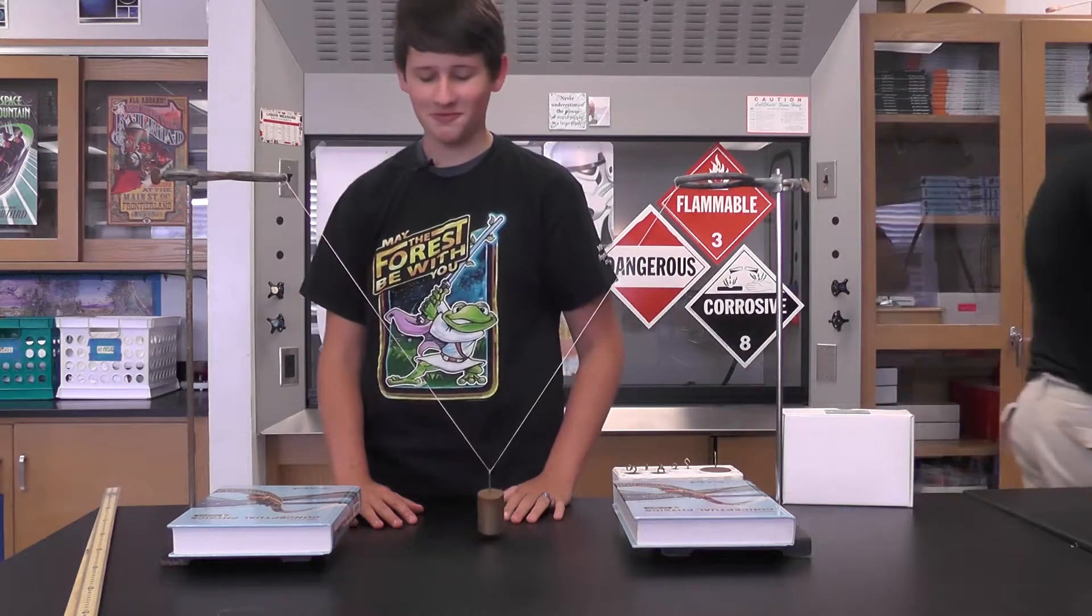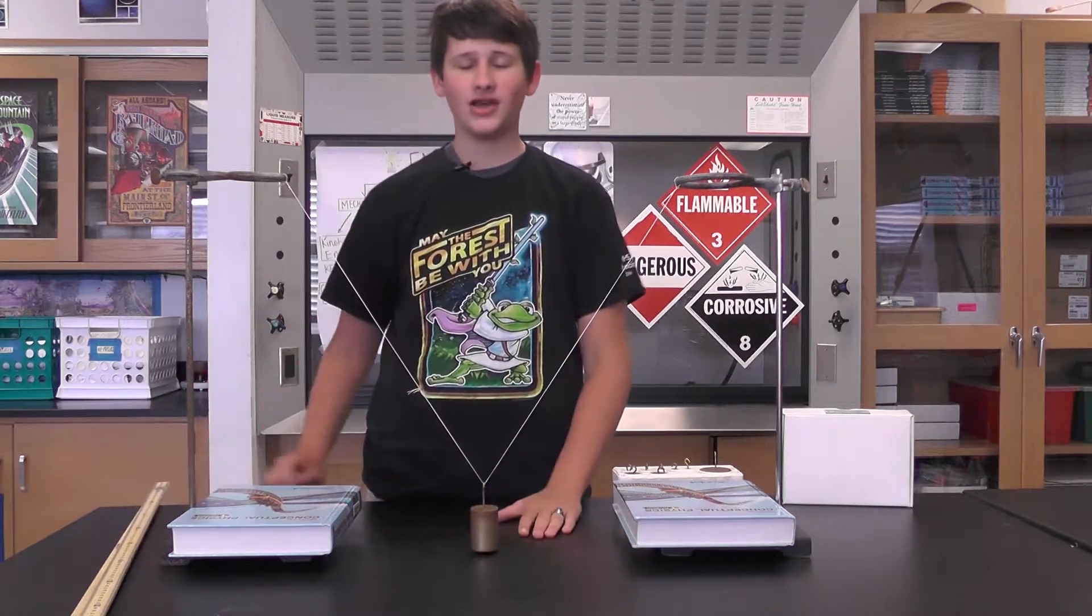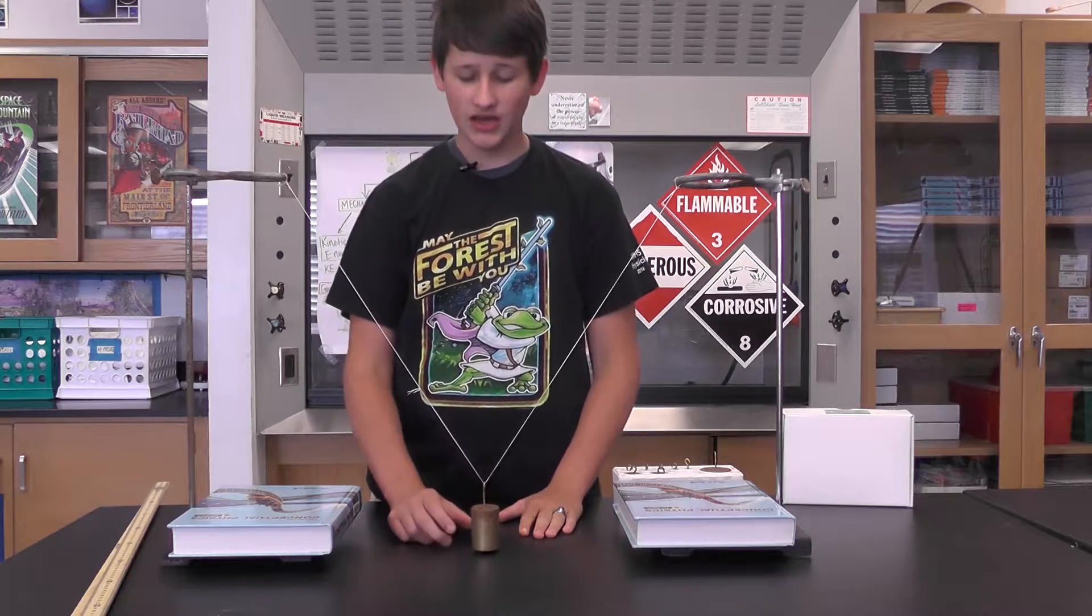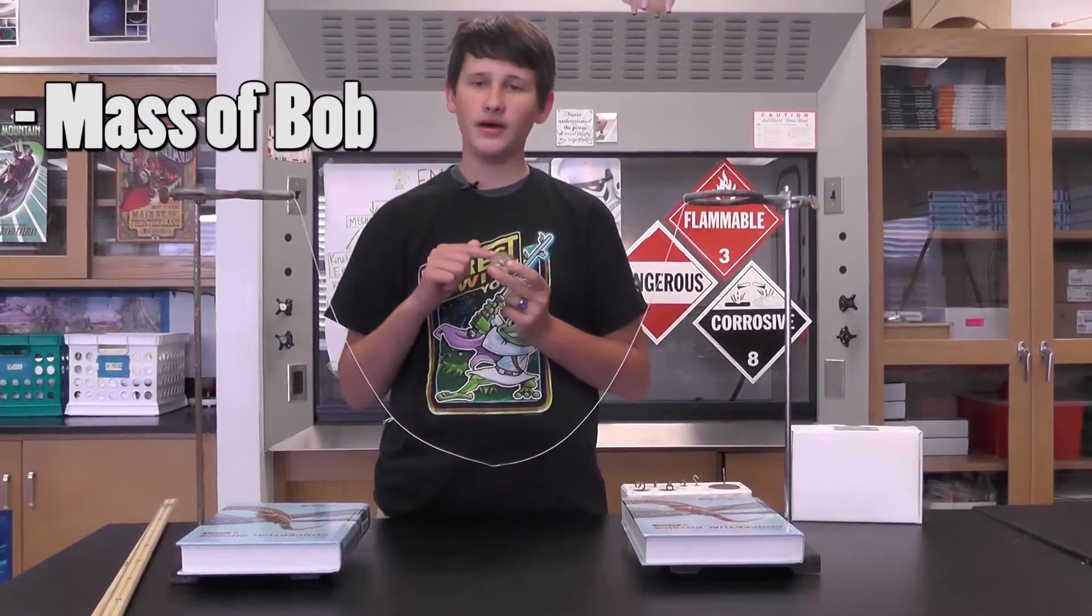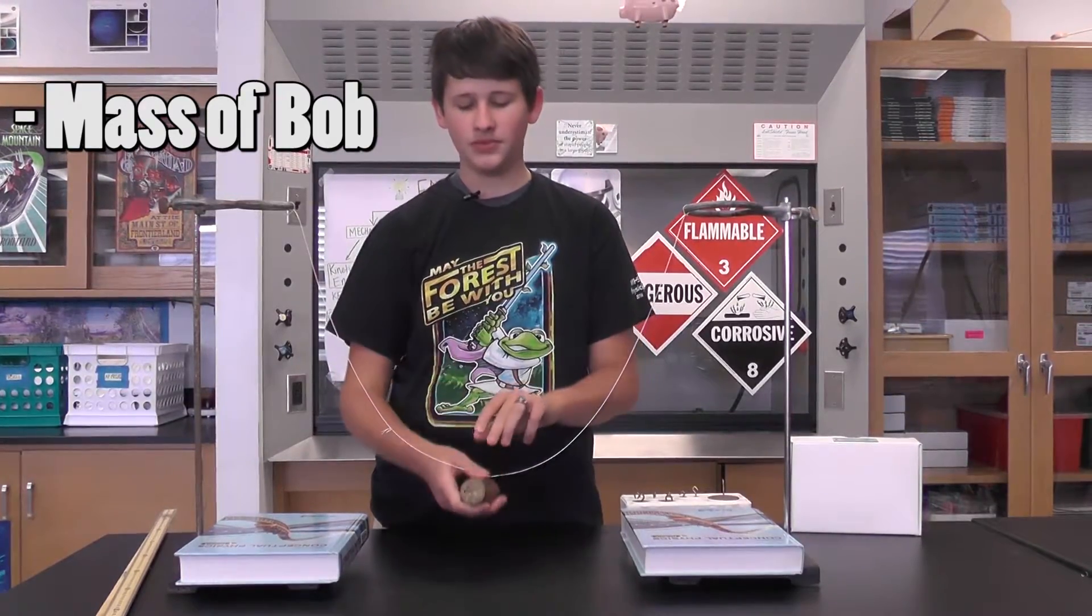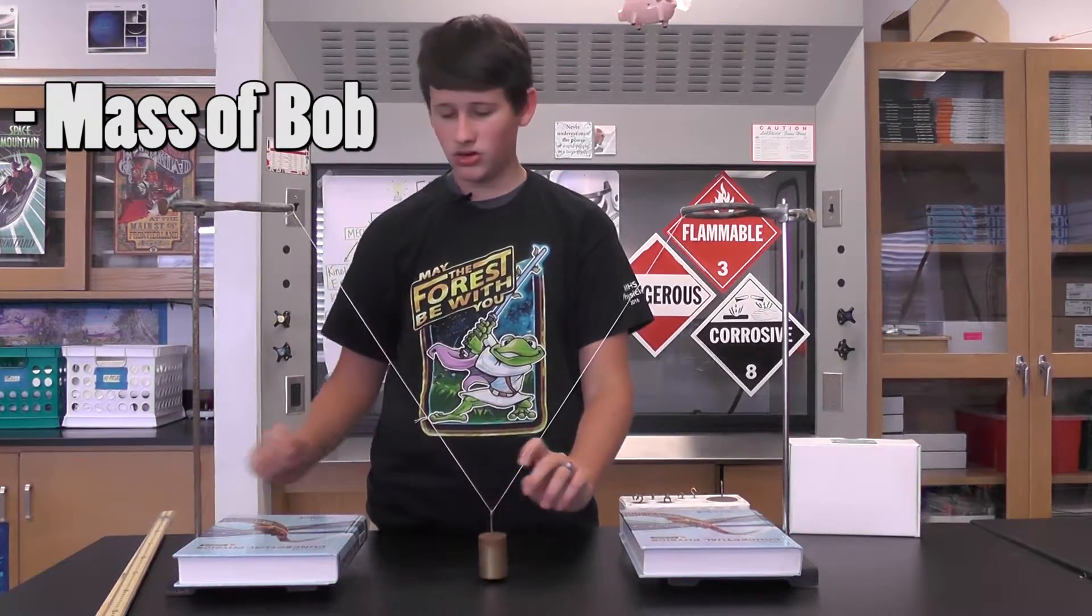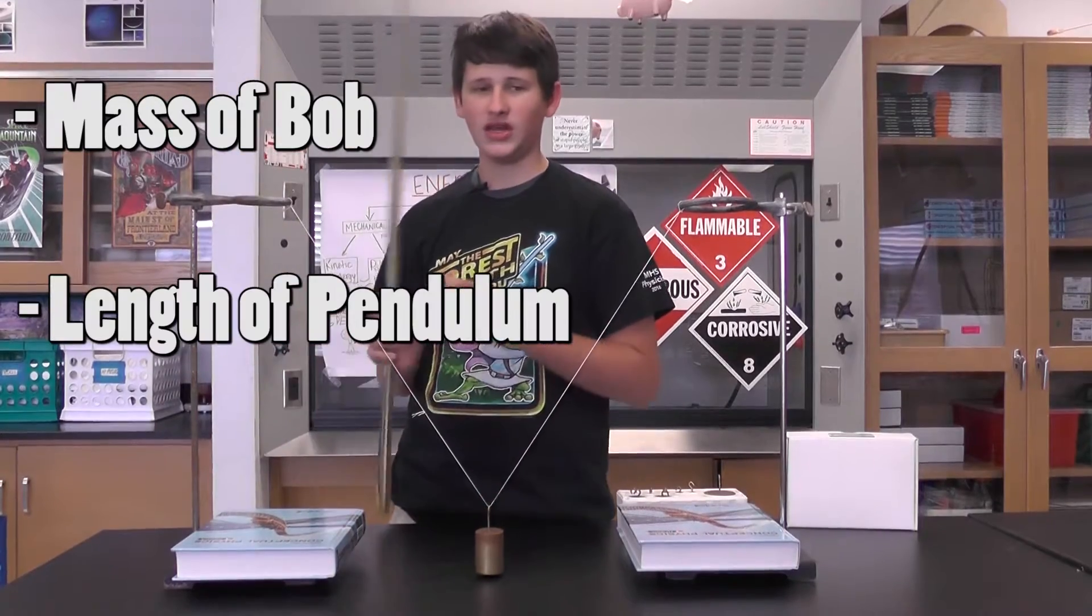Before we get into the actual pre-lab, we need to get some data taken down. You're going to need to write down the mass of the pendulum bob, which is going to be 500 grams, and we are also going to need to measure the length of the pendulum.